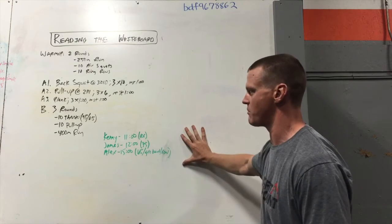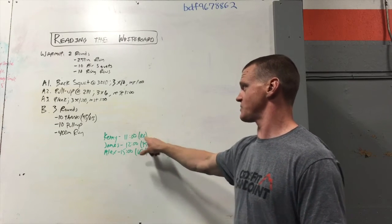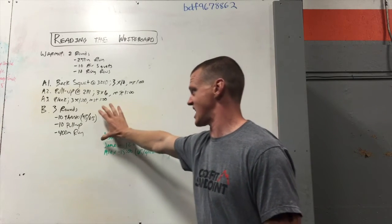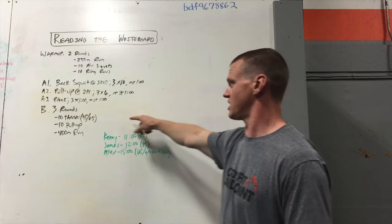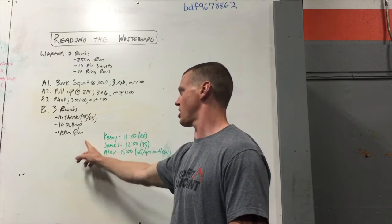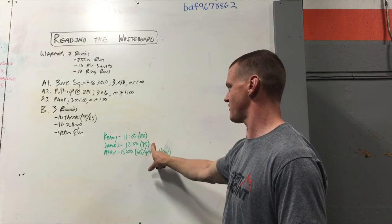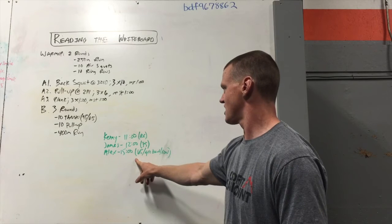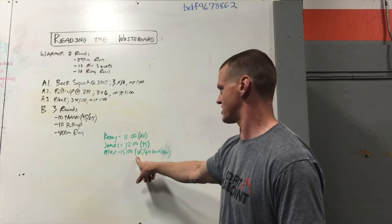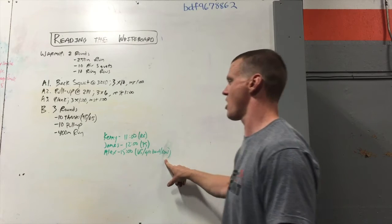And what that means is how they modified or scaled that workout for them for that day. So what the RX means is that Kenny did it exactly as it was written on the board. So he did the ten thrusters, assuming he's a male, he did 95 pounds, he did ten pull-ups, and he did a 400-meter run. James scaled the thrusters to 75 pounds, and Alex scaled the weight, the thruster weight to 65 pounds. He did pull-ups with a green band, and he did a row instead of a run.